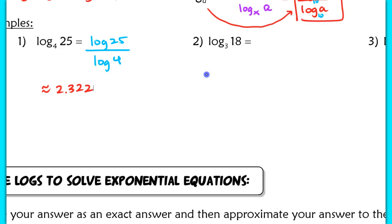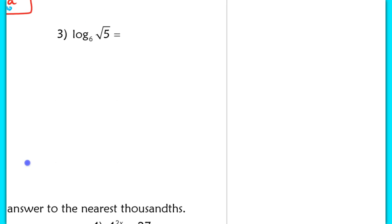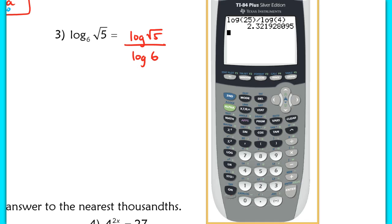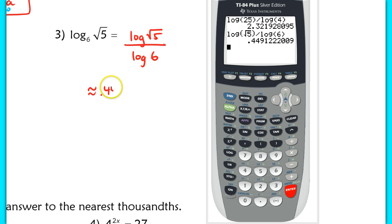Try number 2 on your own. Number 3 has a radical, but the process is the same. Using change of base: log base 10 of root 5 divided by log base 10 of 6. In the calculator, type log of root 5, close the parentheses, divided by log of 6. The result is approximately 0.449.